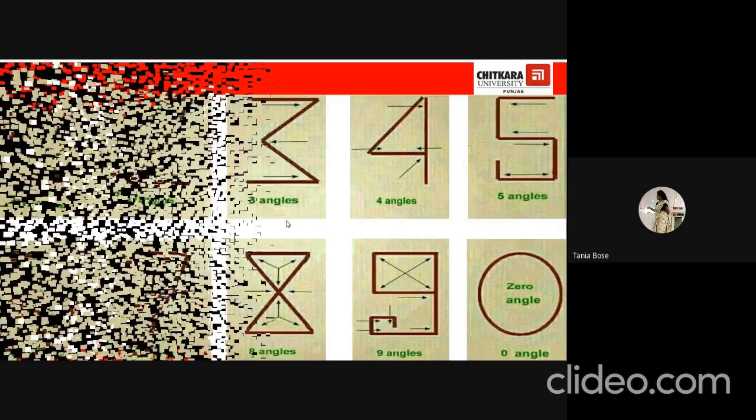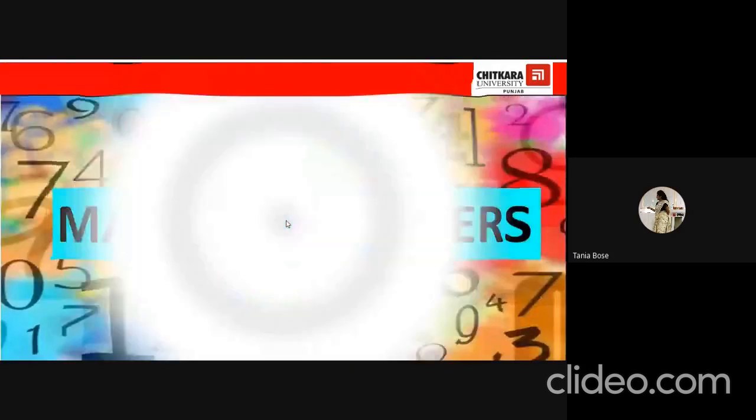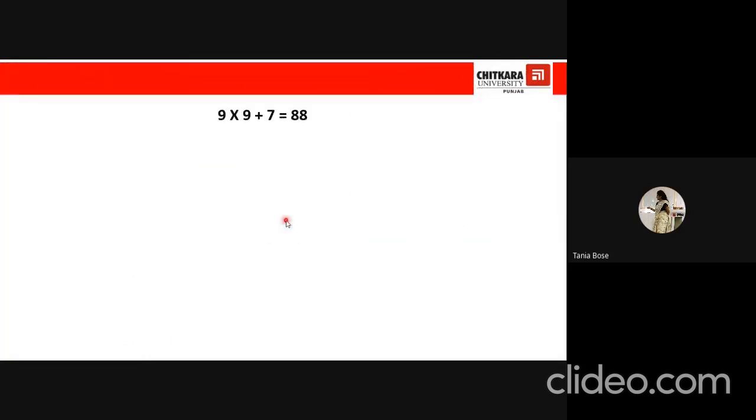Let's see the maths numbers. I will show you some patterns. Look at the first pattern. We have 9 into 9 plus 7 is equal to 88. Look at the next one. 98 into 9 plus 6 is equal to 888. 987 into 9 plus 5 is equal to 8888. Can we relate it? What is the difference? In the first step, we are multiplying all the numbers with 9. So this is the same. This is constant.